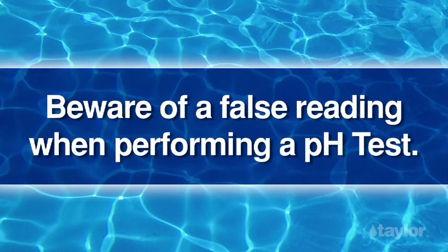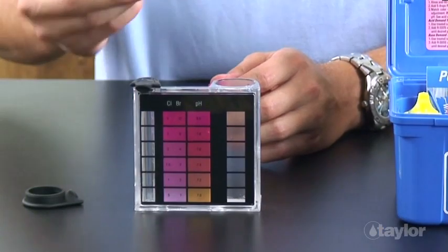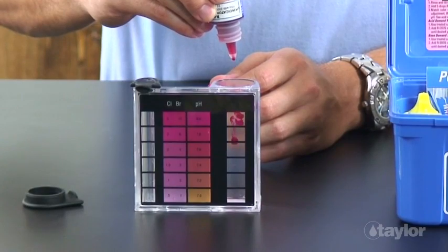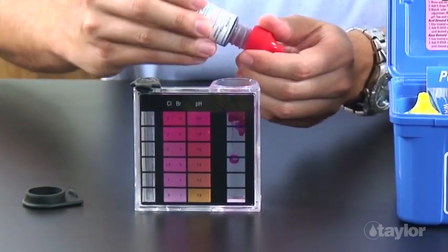Beware of a false reading when performing a pH test. Any of Taylor's phenol red indicators will give a false pH reading in the presence of a high level of halogen sanitizer.